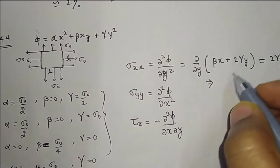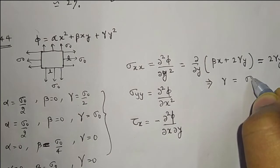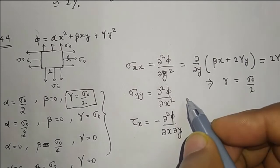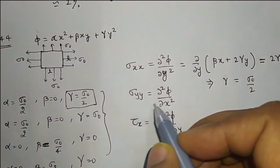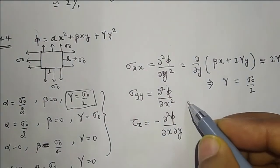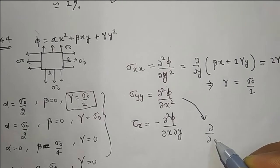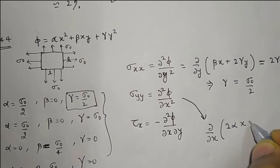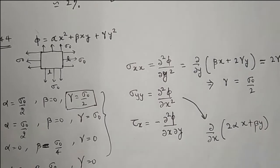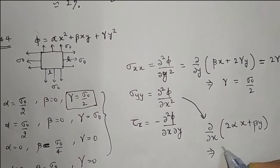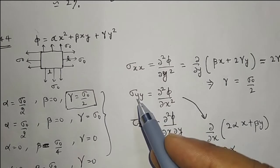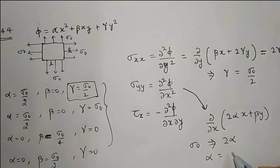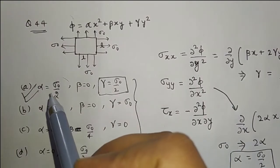Therefore γ = σ₀/2, and only option A contains this value. Checking σᵧ = σ₀ by differentiating the Airy's stress function with respect to x gives 2αx, so α = σ₀/2. Option A is the correct answer.